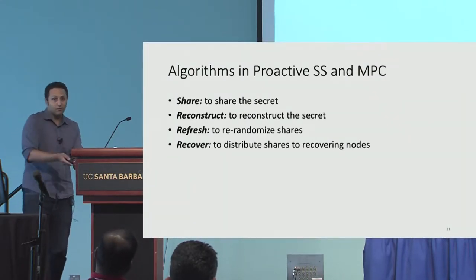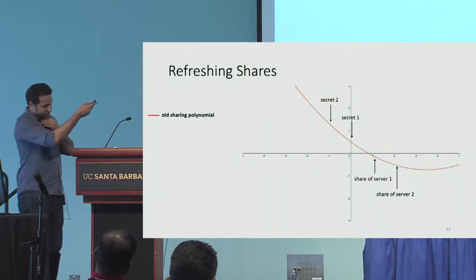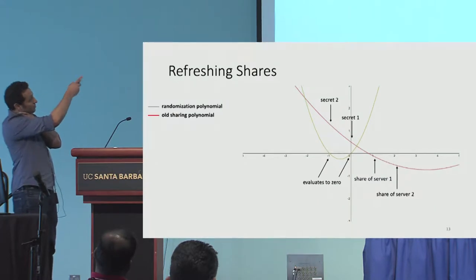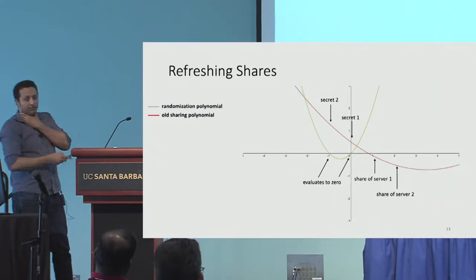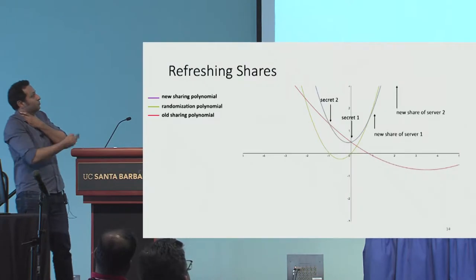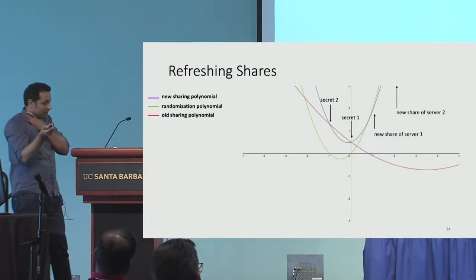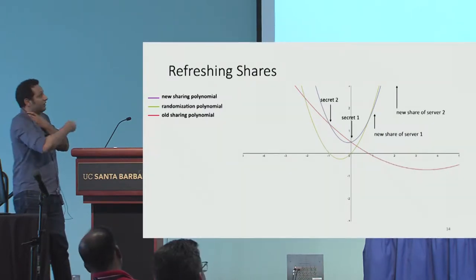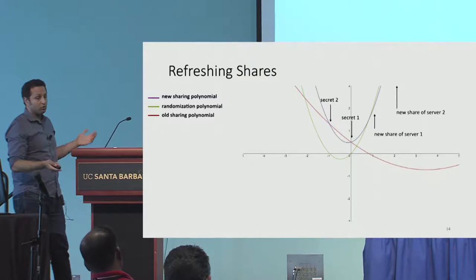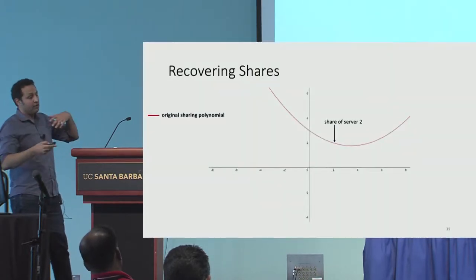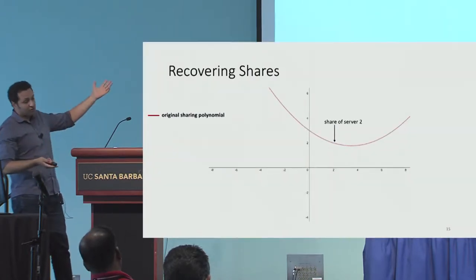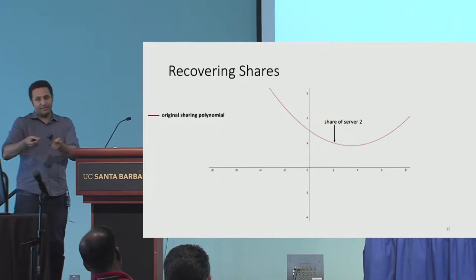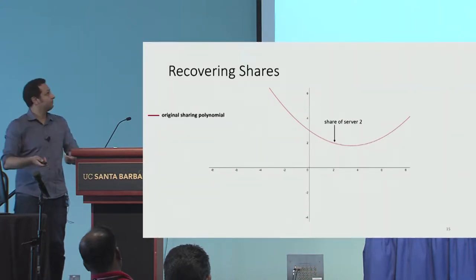At the software level this is non-trivial. When you refresh shares, the standard trick is: everybody gets the evaluation of the polynomial, so to refresh you generate a polynomial that evaluates to zero — the green one — add it, share the secret again, and everybody deletes their old shares. What you get is a new sharing of the same secret. When you recover a share, a party that has left the protocol and comes back has no state, so you need to give it existing shares.